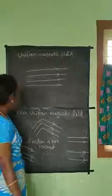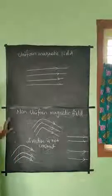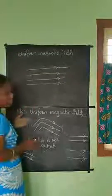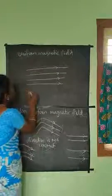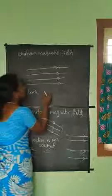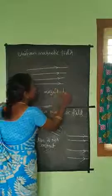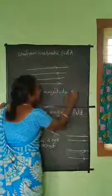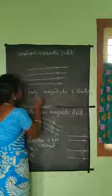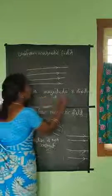Uniform magnetic field versus non-uniform magnetic field. In a uniform magnetic field, both the magnitude and direction of the magnetic field are the same at all points.